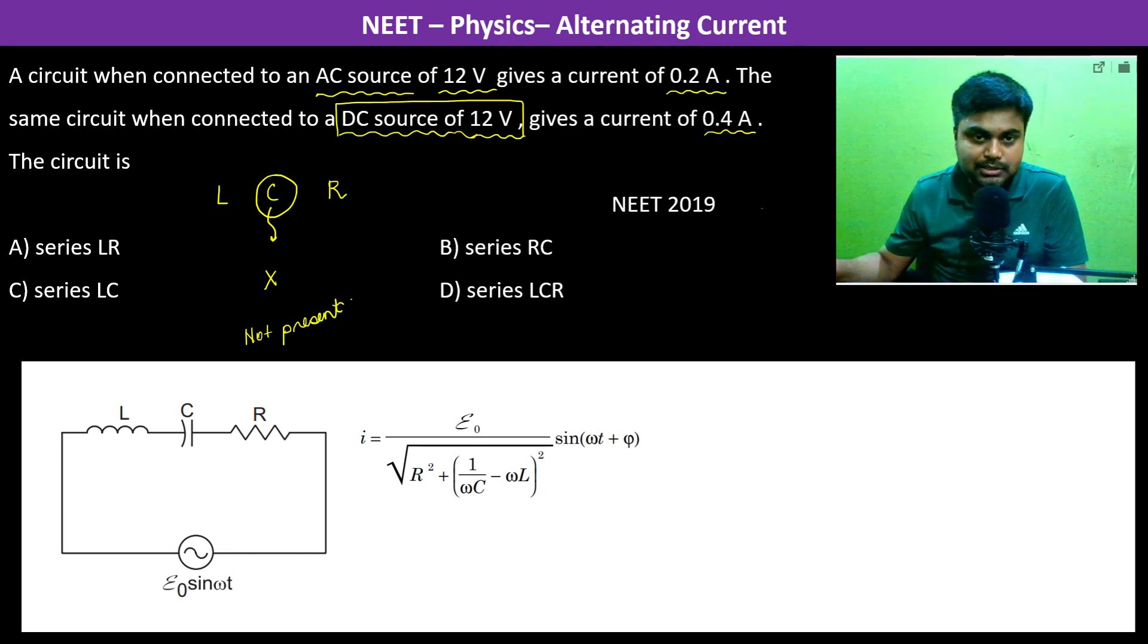What we are left with is L and R. Now, again, there are two possibilities. Three possibilities.